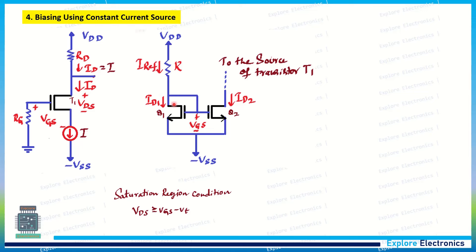I_ref equals ID1, and Q1 maintains its saturation condition. Q2 has the same VGS as Q1 since their gates are connected together, and Q2 is also assumed to be in saturation. Because both transistors are in saturation and share the same VGS, their drain currents are equal. The current mirror circuit mirrors ID1 to ID2 — ID1 and ID2 are the same. That is the concept of current mirroring.